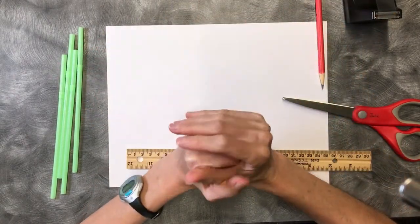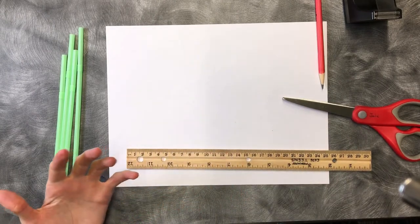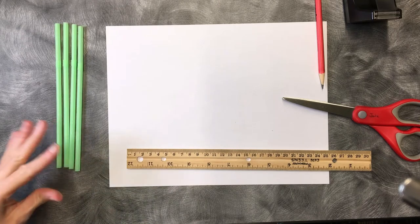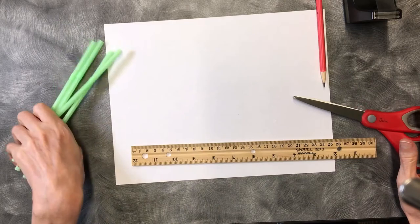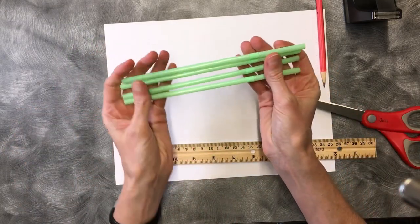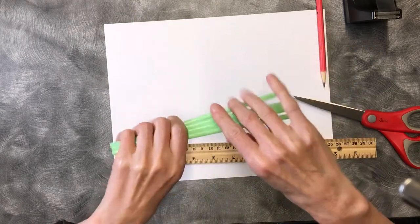If you picked up the packet from the library, you should have some straws and some cardstock in it already. Your straws may look like this or they may not be the bendy kind and we'll get to that later. I'll show you how to do it with either one.